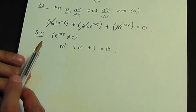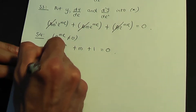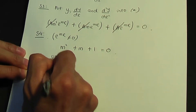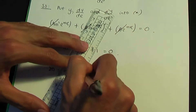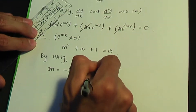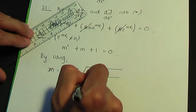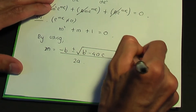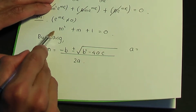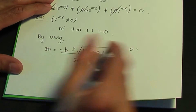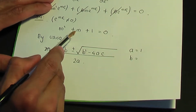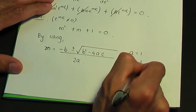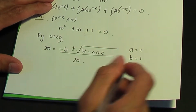We can't factorise, so we need to use the quadratic formula: m = (−b ± √(b² − 4ac)) / 2a. Here a is the coefficient of m², which is 1; b is the coefficient of m, which is 1; and c is the constant, which is also 1.